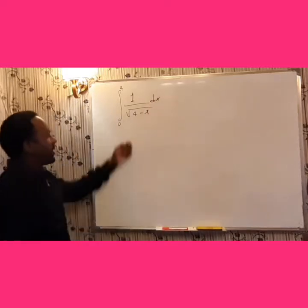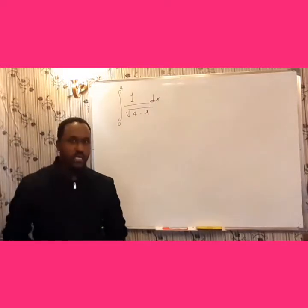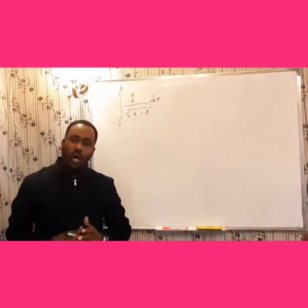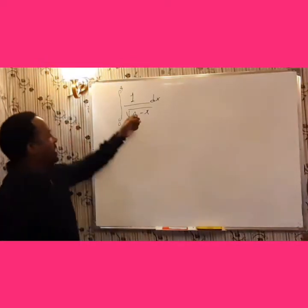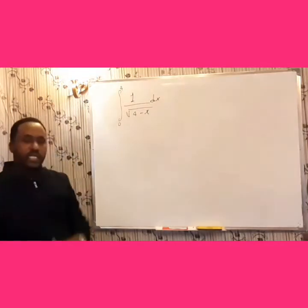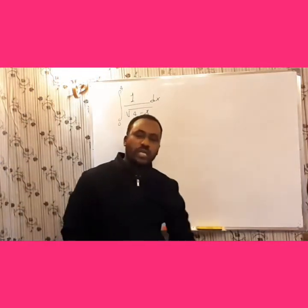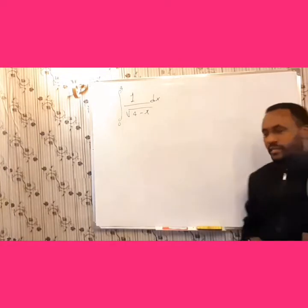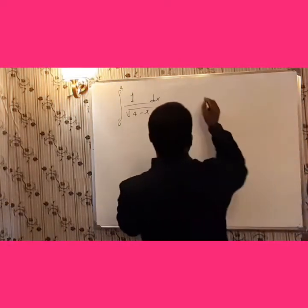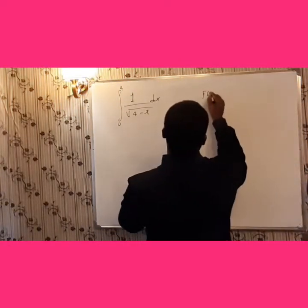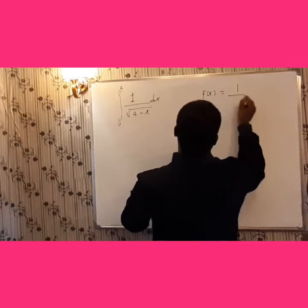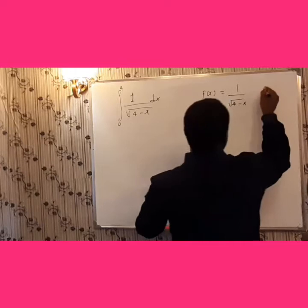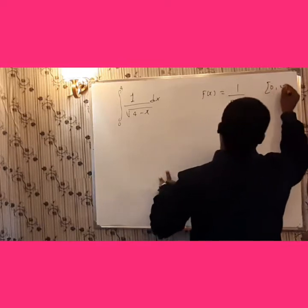How are we going to find the integral of this one? In order to find the integral of such a problem, you have to be careful about whether the integrand of this function is continuous or not on the given interval. Our integrand is f(x) = 1 over square root of (4 minus x), and the given interval is [0, 4].